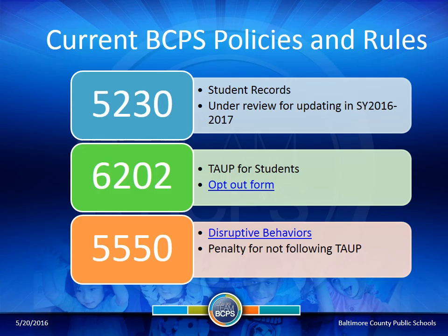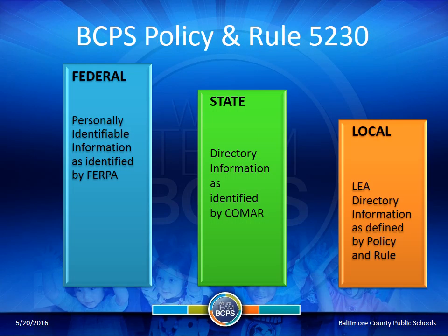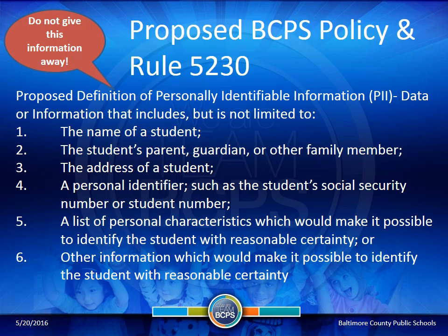In our attempt to be proactive, we are addressing and updating Policy and Rule 5230, which is going to impact Rule 6202 as well as Rule 5550. Rule 5230 affects what student records we collect and what can be given out to third parties. Rule 6202 is the acceptable use policy, which comes with an opt-out form that parents can sign if they don't want their student's information released. And Rule 5550 is the disruptive behaviors policy — essentially penalties for not following the acceptable use policy.